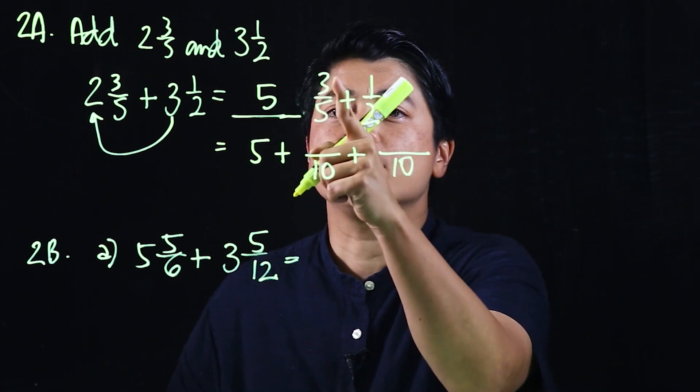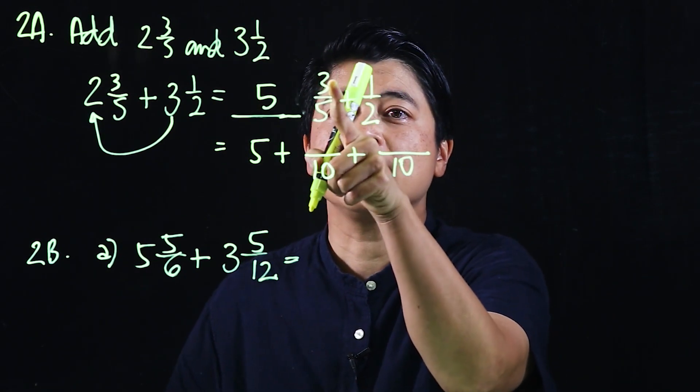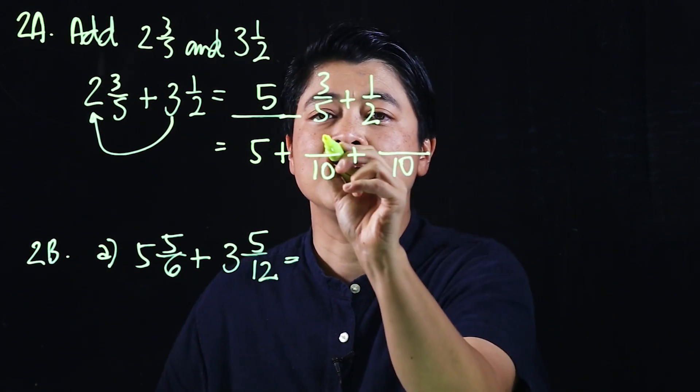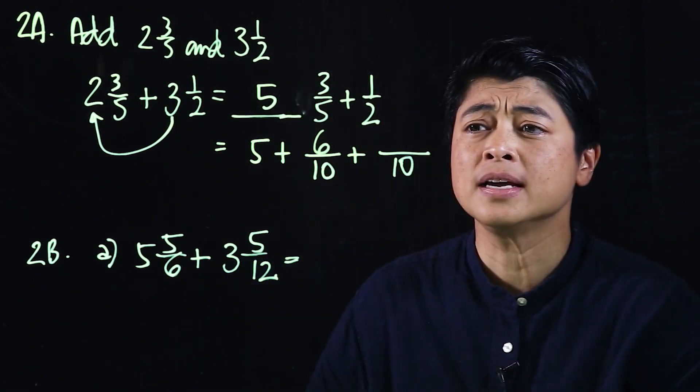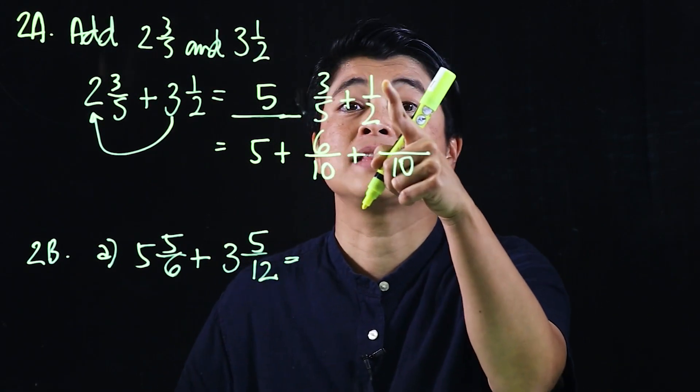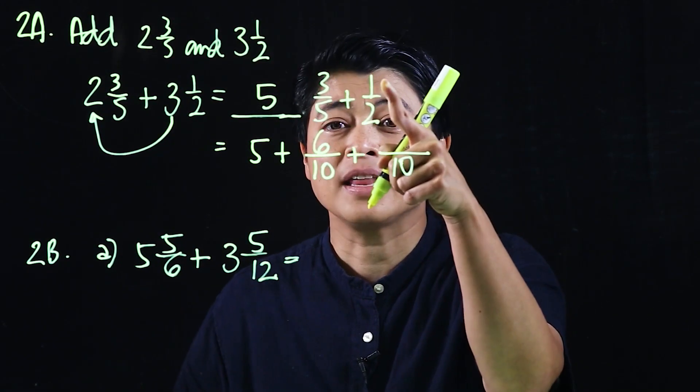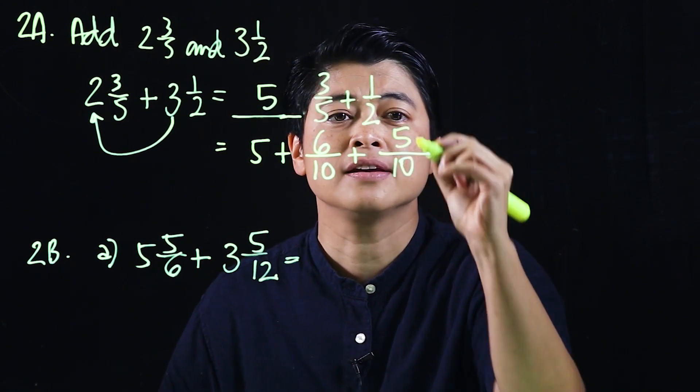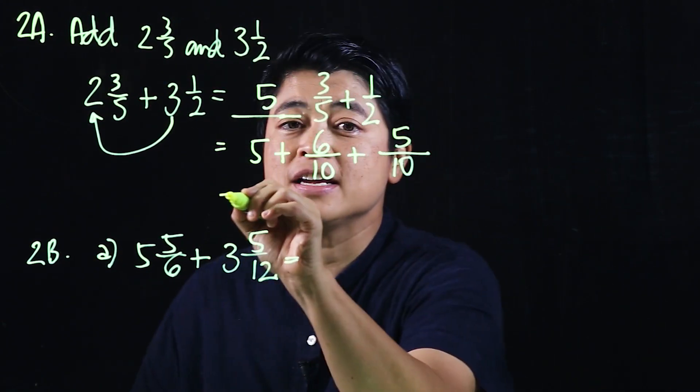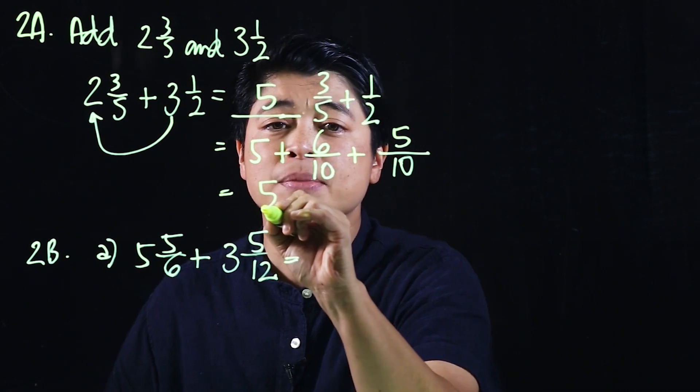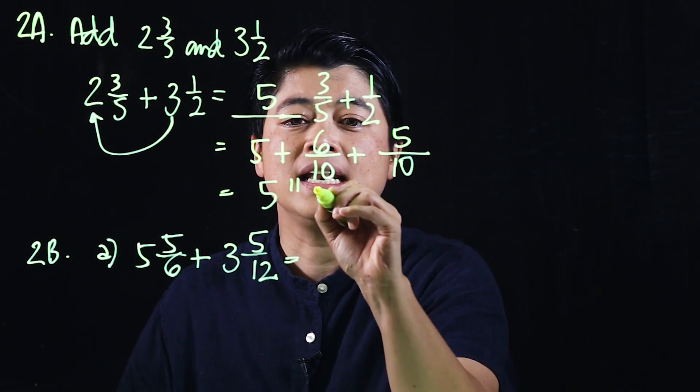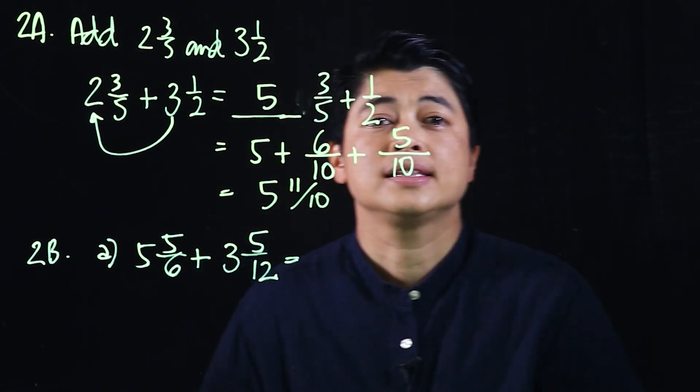If I want to make that over 10, I need to multiply that by 2, which makes it 6. If I want to make that 10, I need to multiply that by 5, which makes that 5. So which means if I add it together, that will be 5 and 11/10.